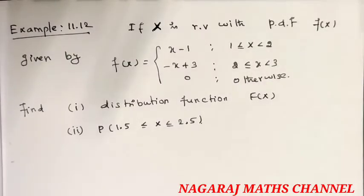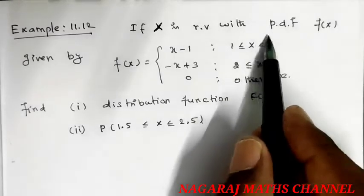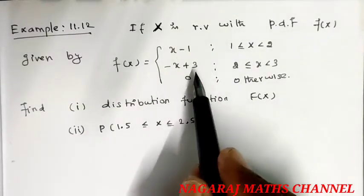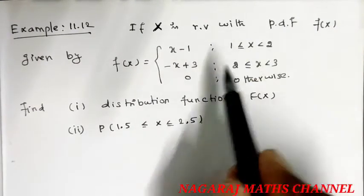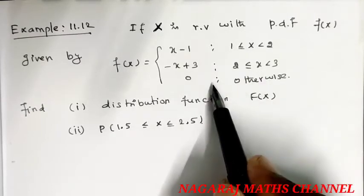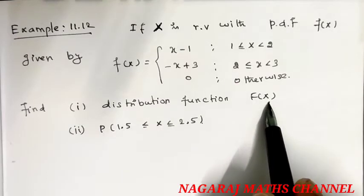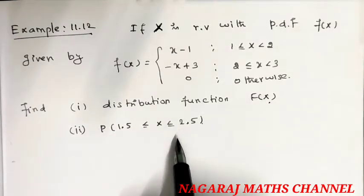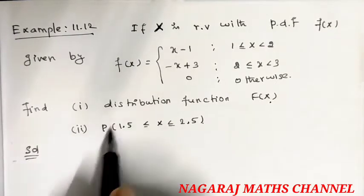Hi students, welcome to my channel. Example 12: if x is a random variable with a probability density function f(x), where f(x) = (x - 1) for 1 ≤ x ≤ 2, and f(x) = (-x + 3) for 2 ≤ x ≤ 3, otherwise zero. Find the distribution function capital F(x) and the probability P(1.5 ≤ x ≤ 2.5).